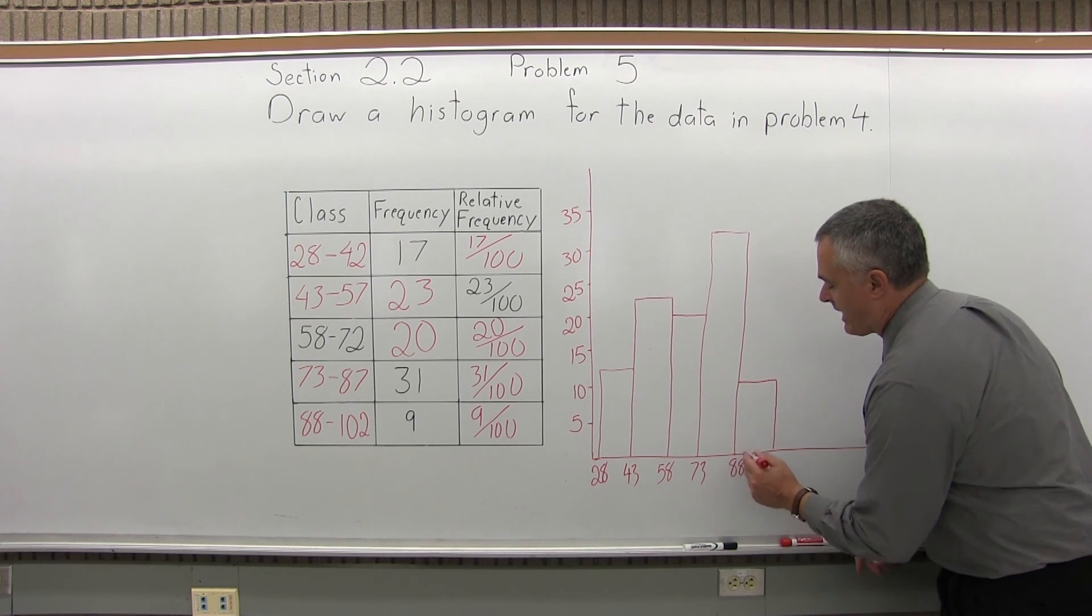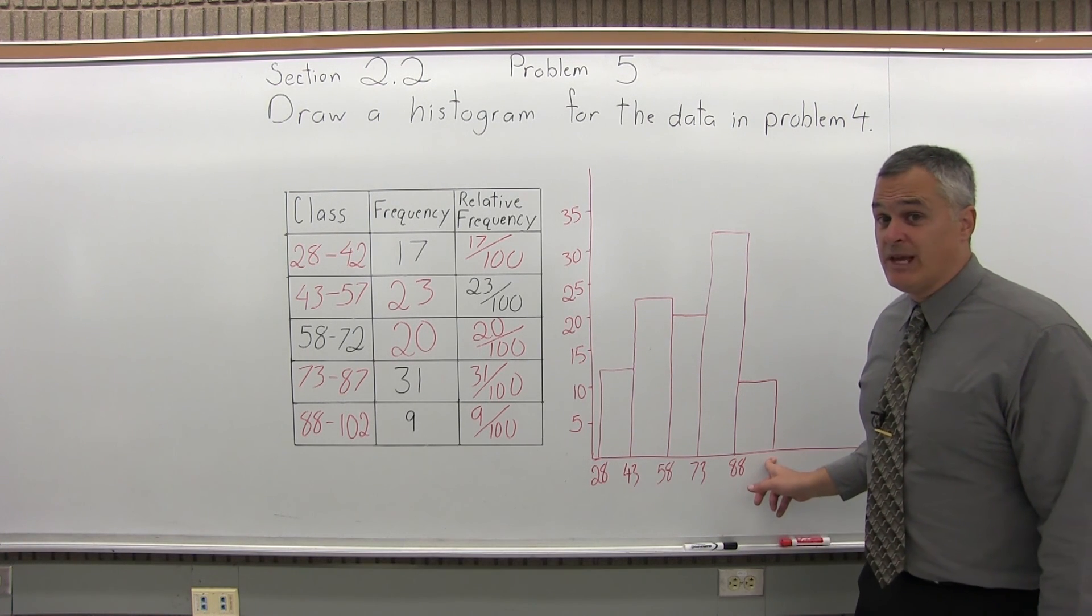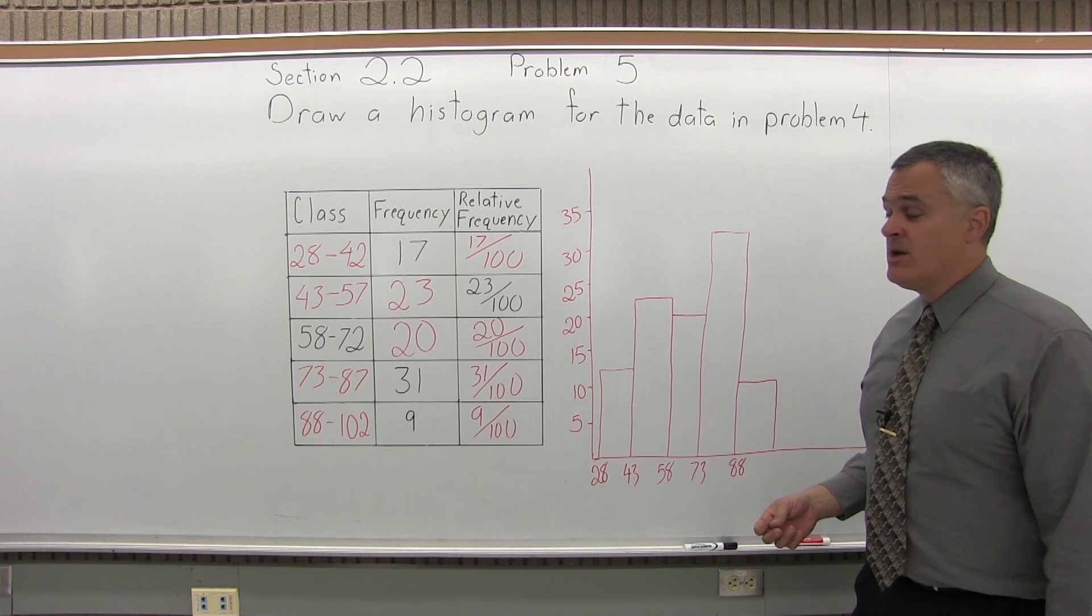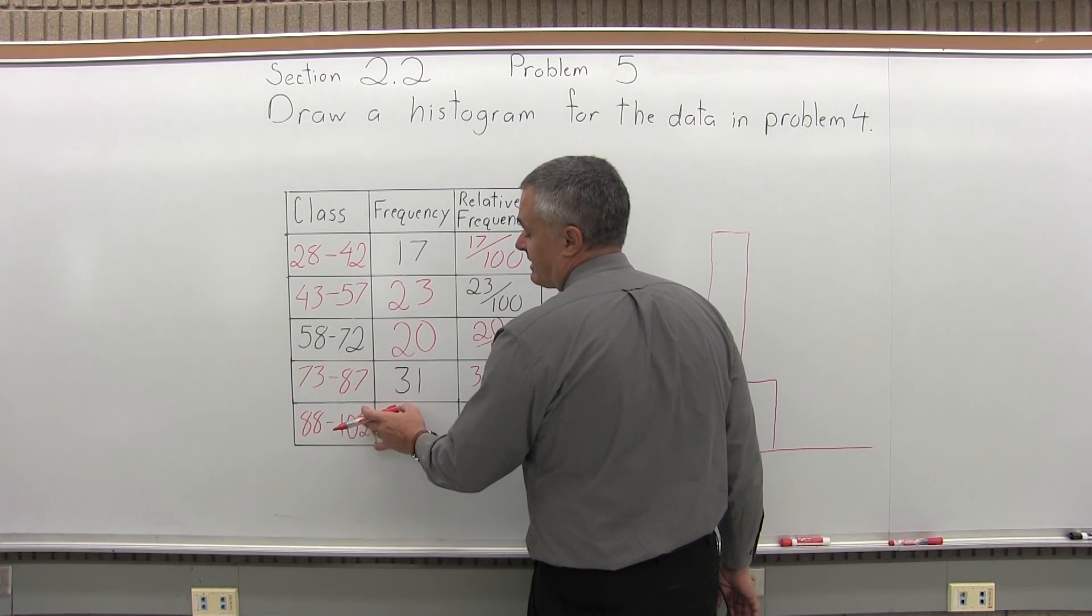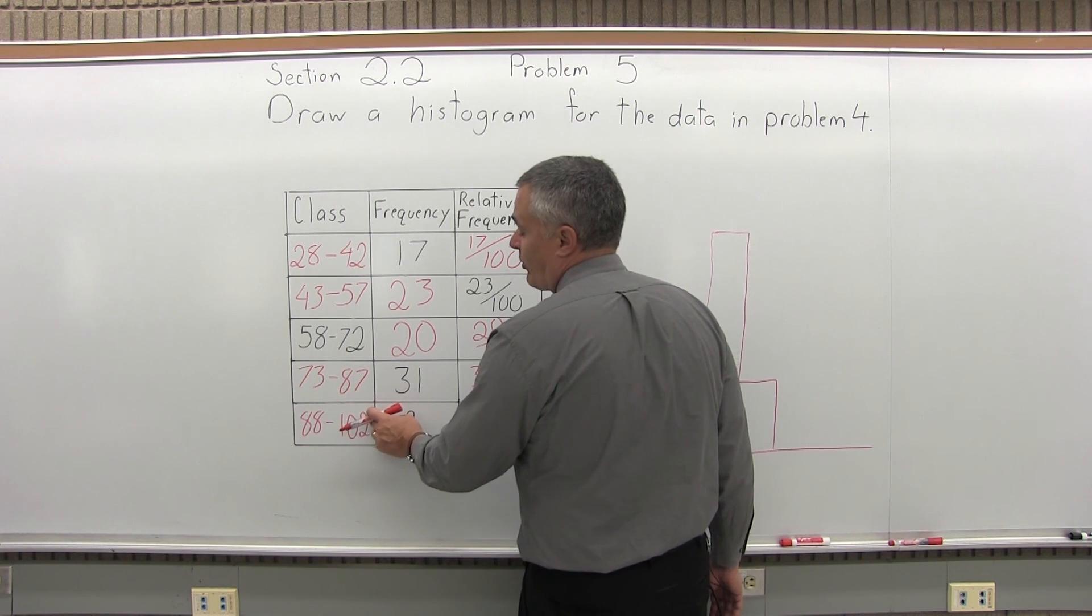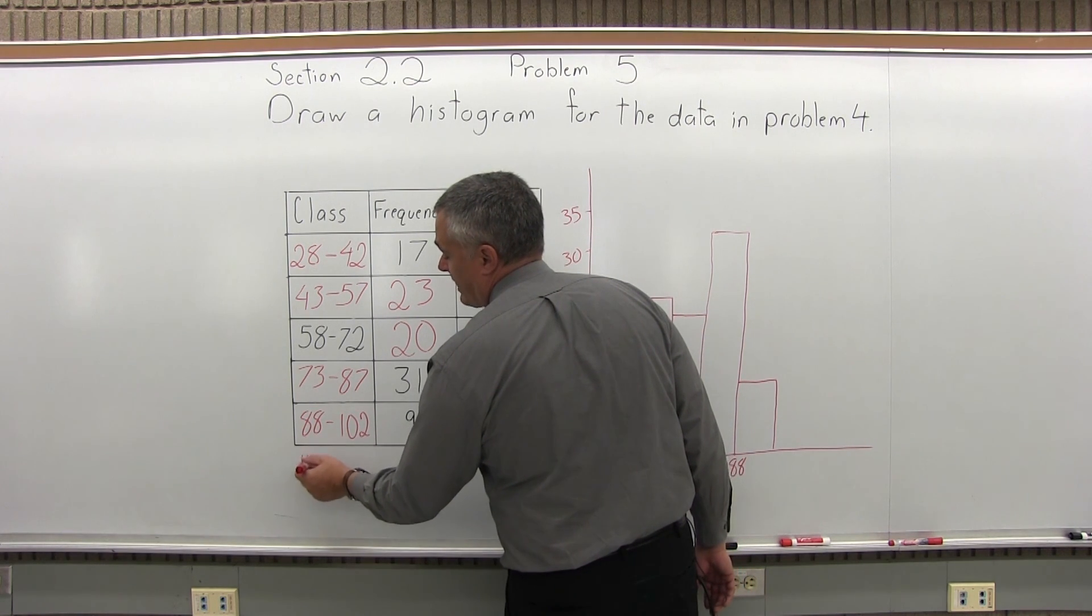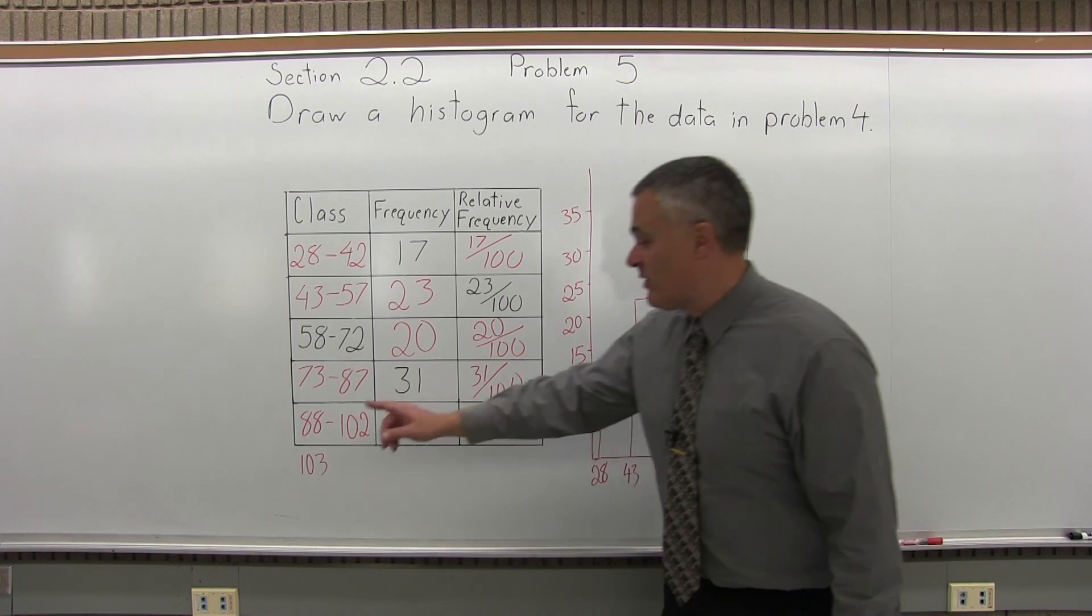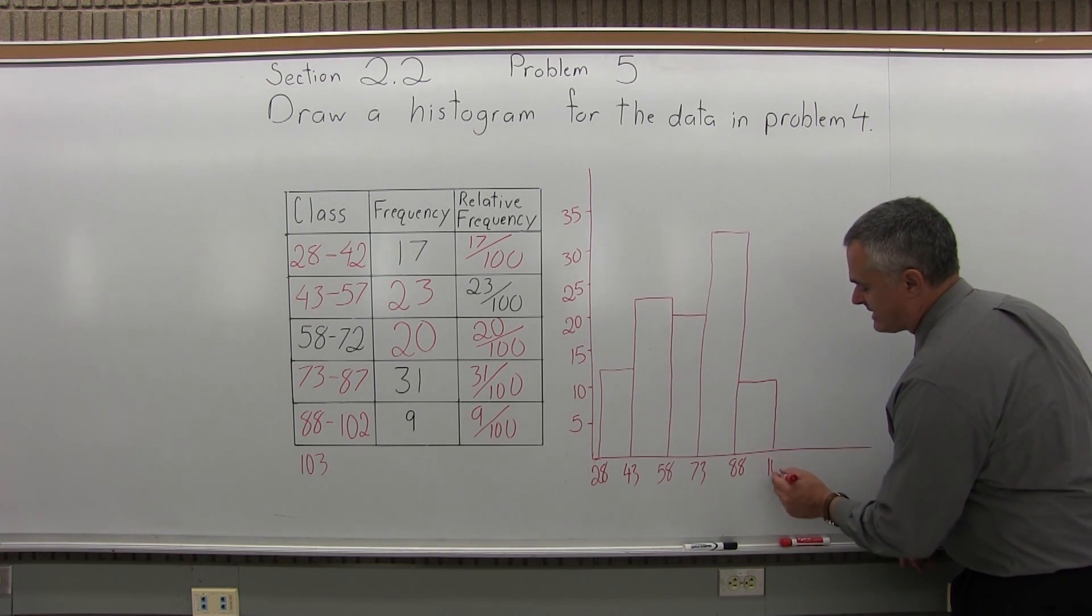But now, what happens is you wind up with the last edge that doesn't have a label under it. And there is no next class. But, you can just say pretend that there is a next class at some point in the future. If the last class we have ends at 102, the next class to have no gap and no overlap would have to begin at 103 if there ever is a next class. And that would be the next lower class limit. That's what would go under that last edge, 103.